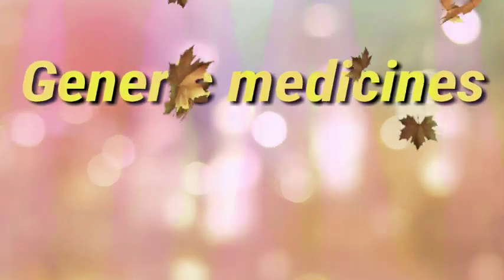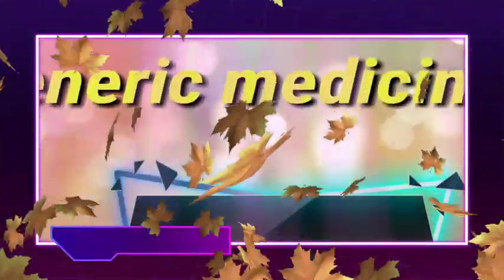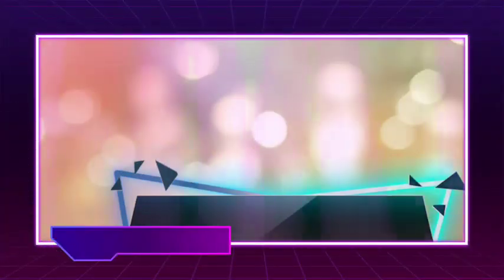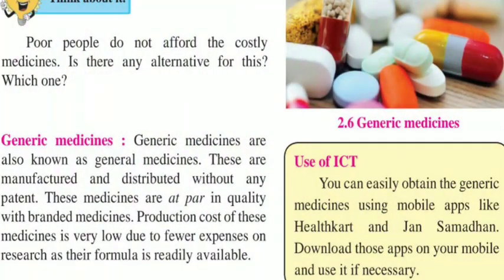Let us see generic medicines. Generic medicines are also known as general medicines. These are manufactured and distributed without any patent. These medicines are at par in quality with branded medicines. Their production cost is very low due to fewer expenses on research, as the formula is readily available.